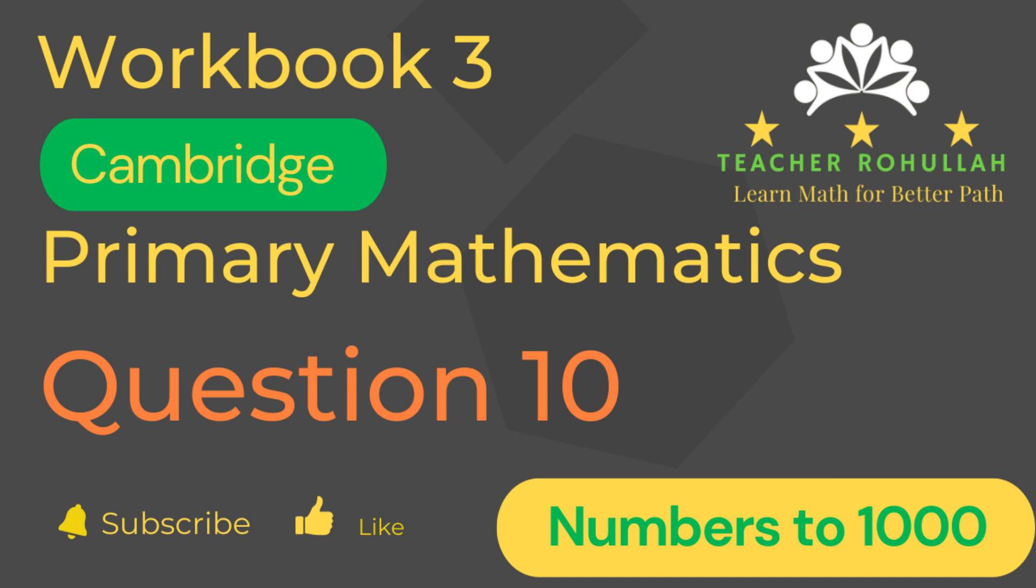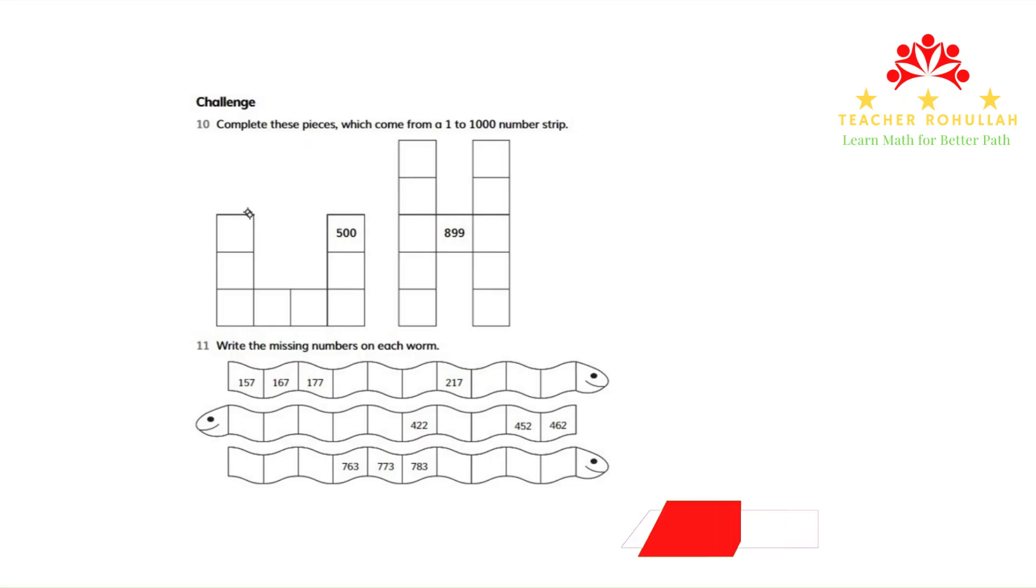Let's now move to the question and solve it. On page 12, we have two questions. The first question says, complete these pieces which come from a 1 to 1000 number strip.